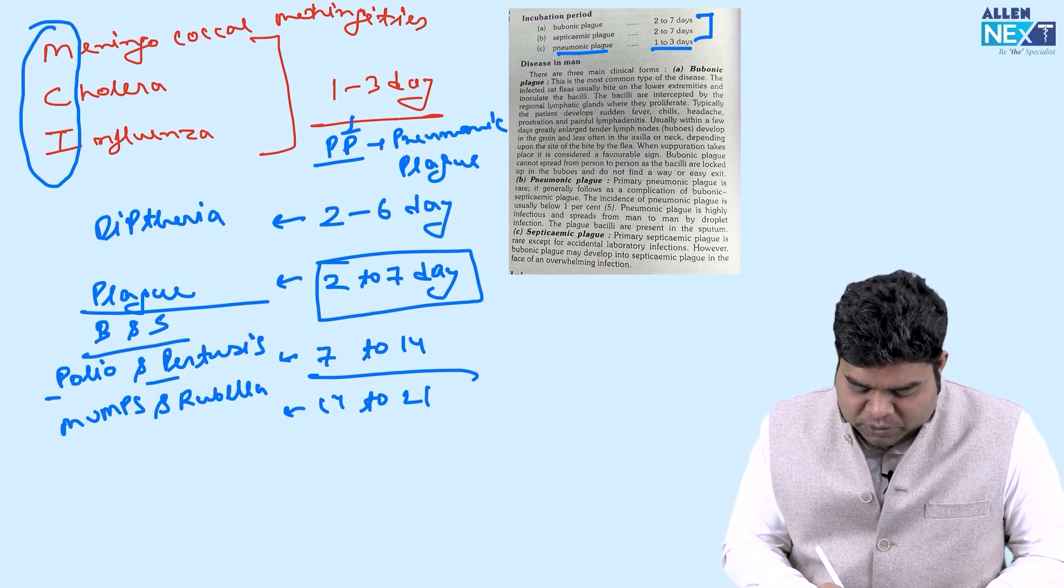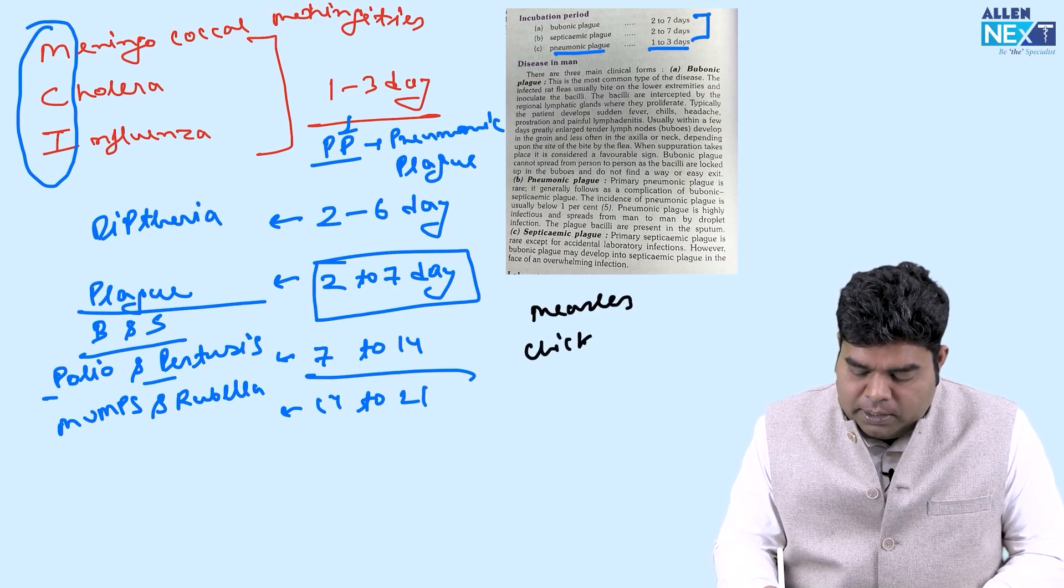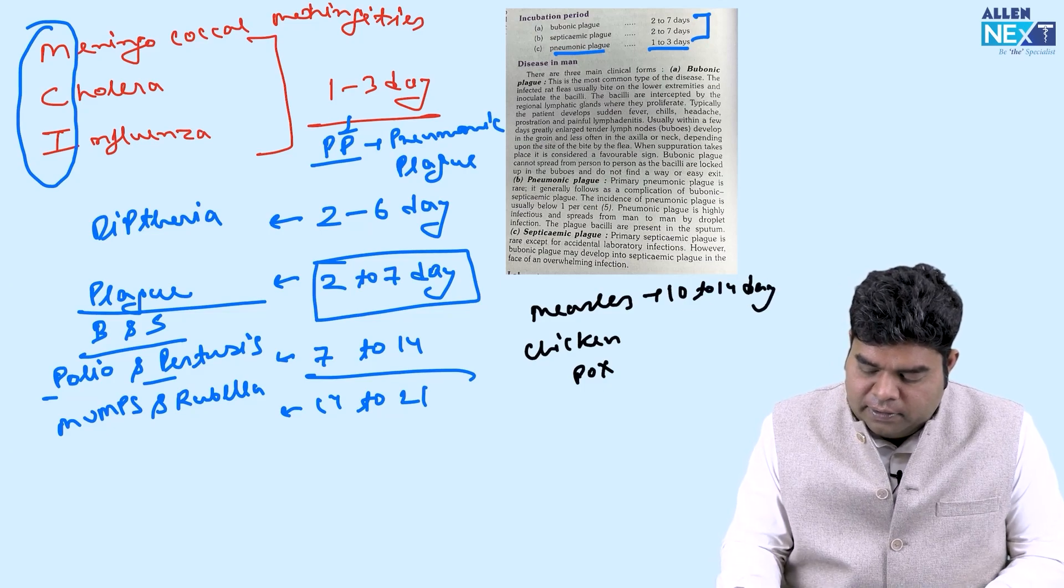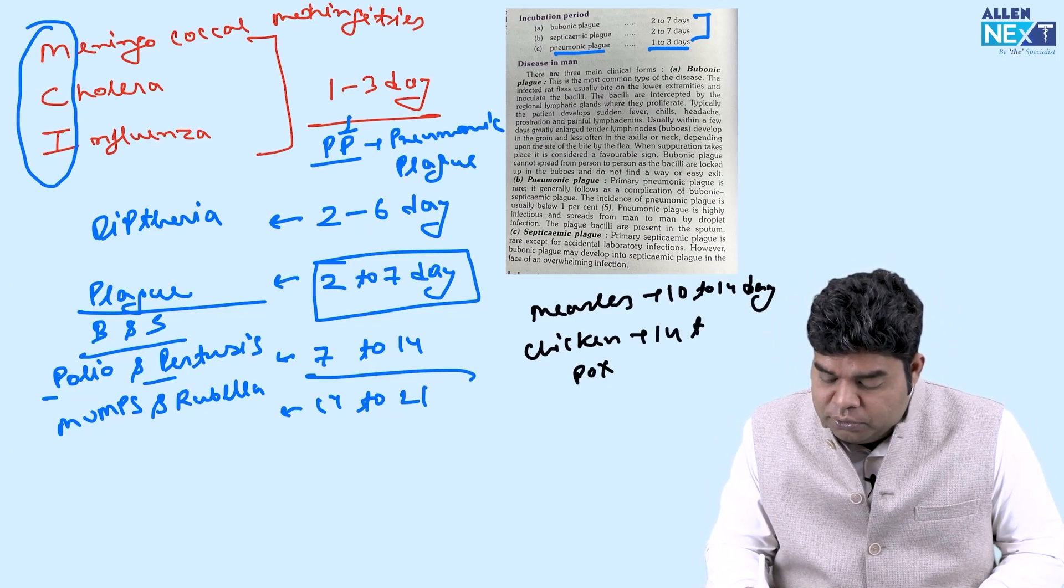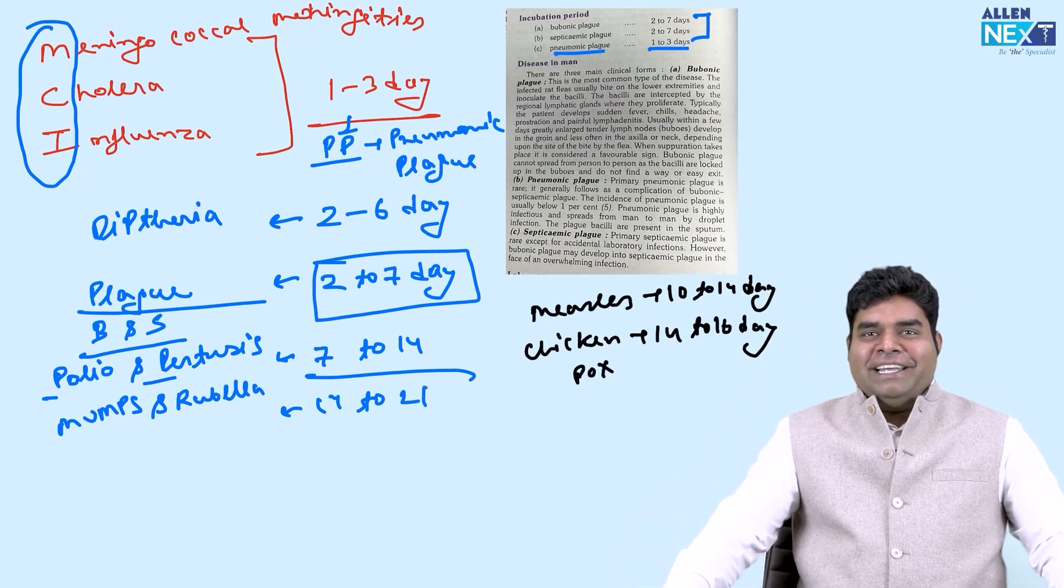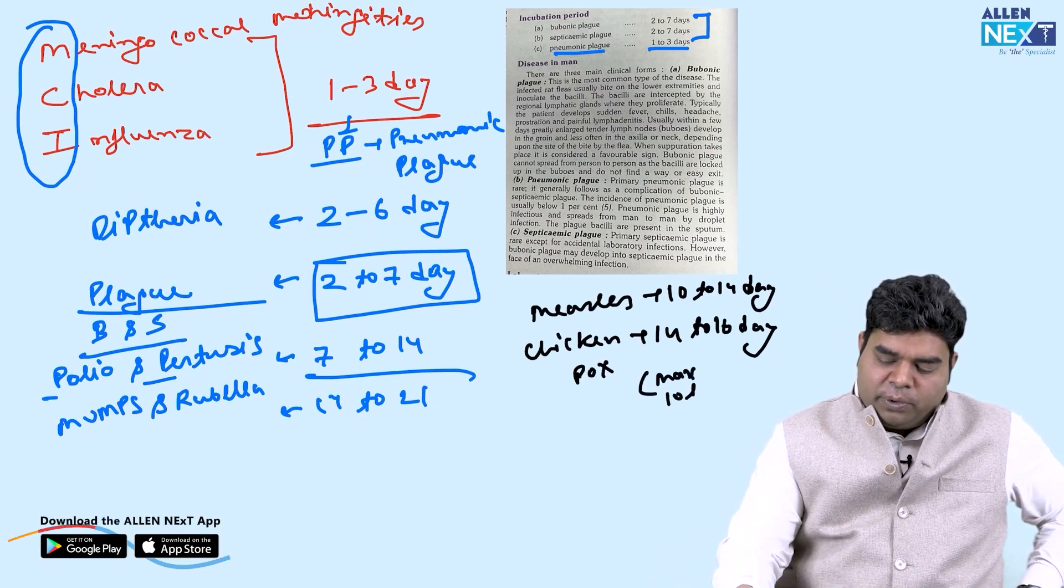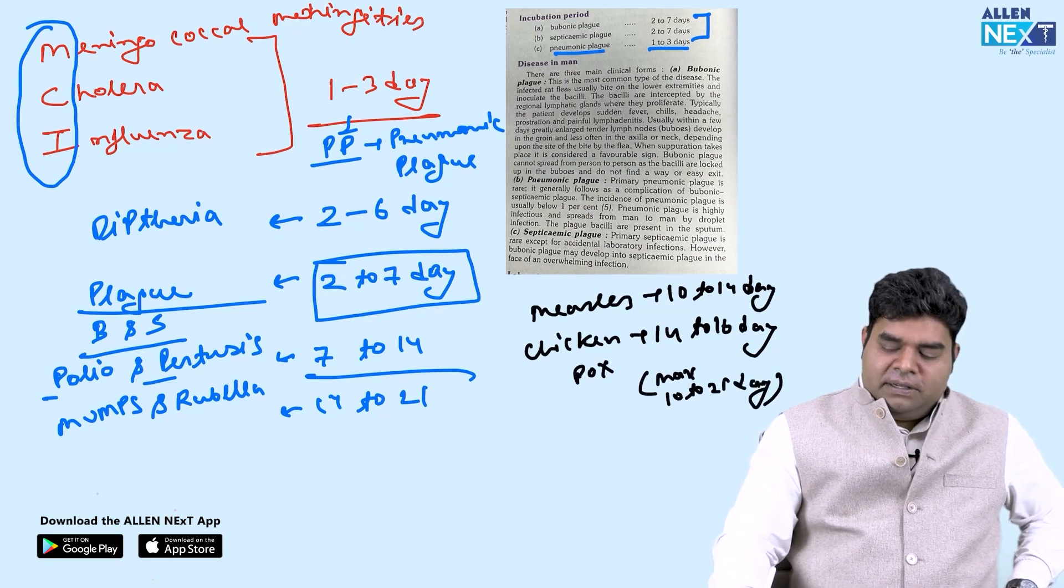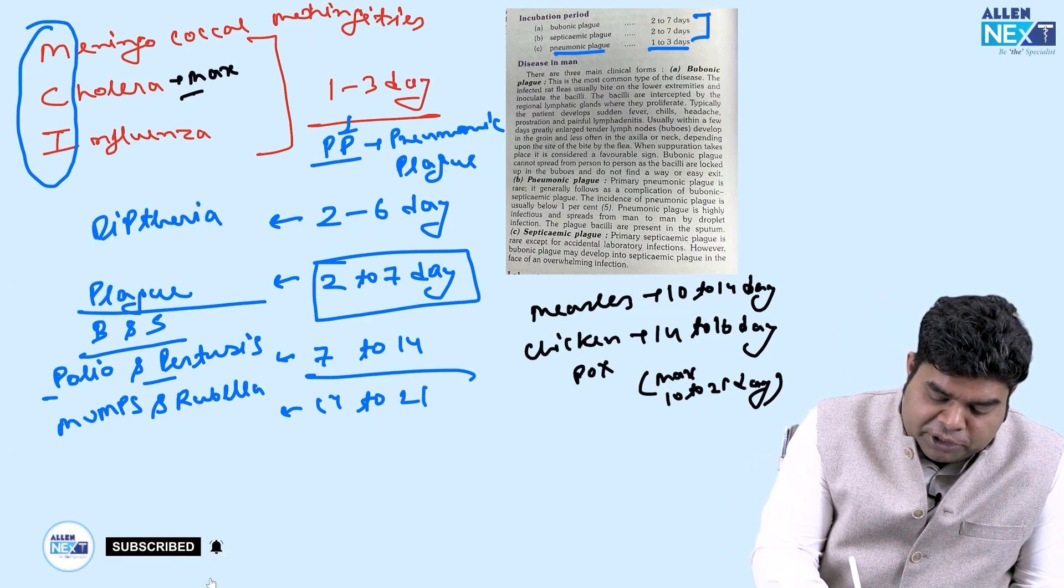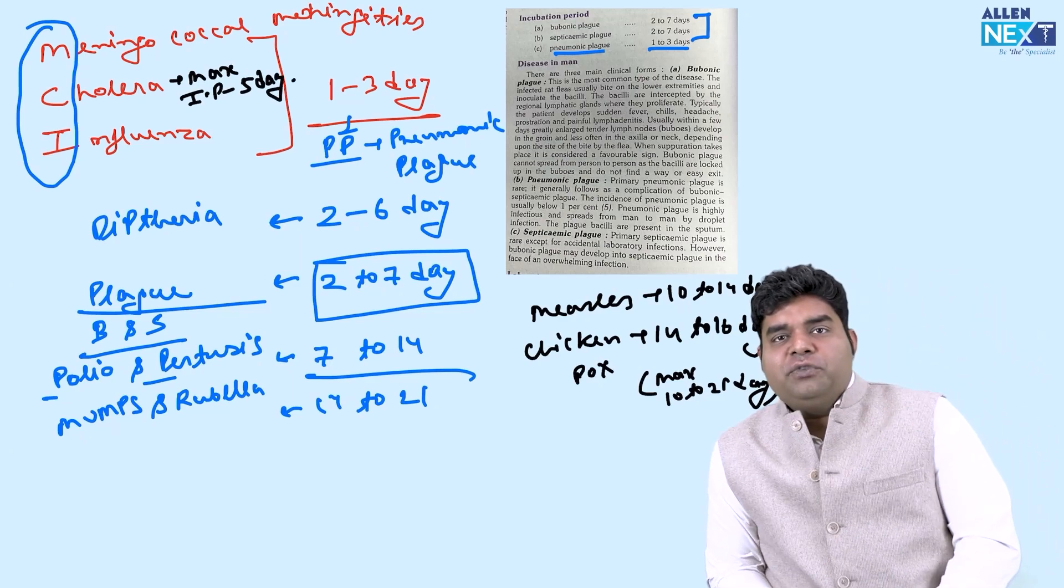After this we are left with only 2, that is measles and chicken pox, and there is a rhyming there also. Measles is 10 to 14 days and chicken pox is 14 to 16 days. 10 to 14, 14 to 16, again rhyming for chicken pox. Of course the maximum is 10 to 21 days but average is what they ask, 14 to 16. Even for cholera the maximum incubation period is 5 days. This is the average incubation period which we have written here.